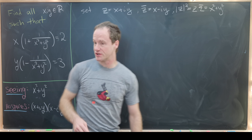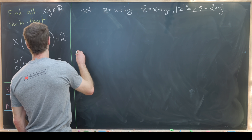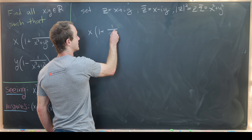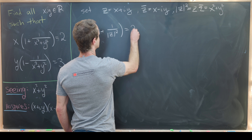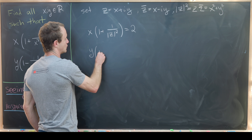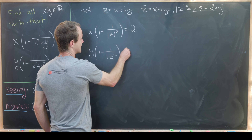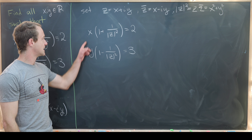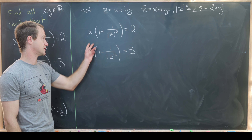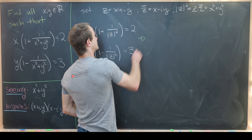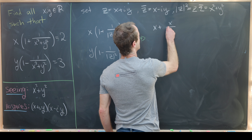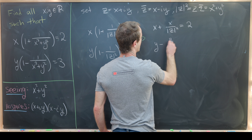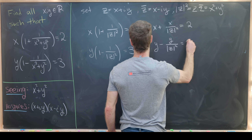Now let's take the first equation and rewrite it using this notation. We have x times (1 plus 1 over |z|²) equals 2, and y times (1 minus 1 over |z|²) equals 3. Distributing gives x plus x over |z|² equals 2, and y minus y over |z|² equals 3.